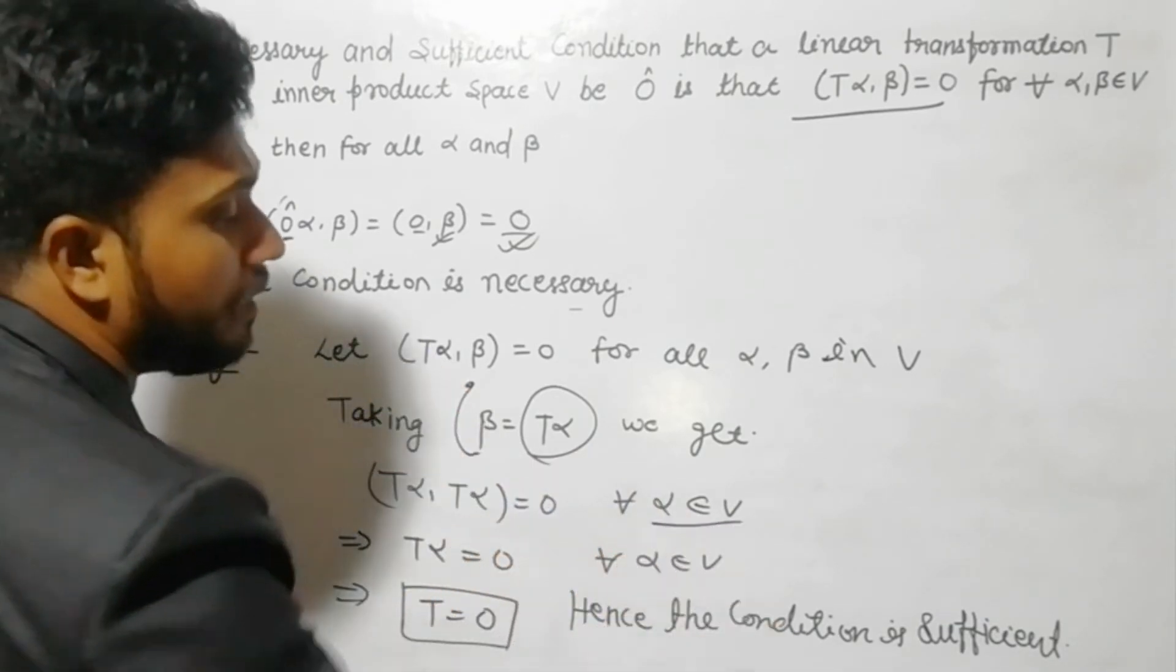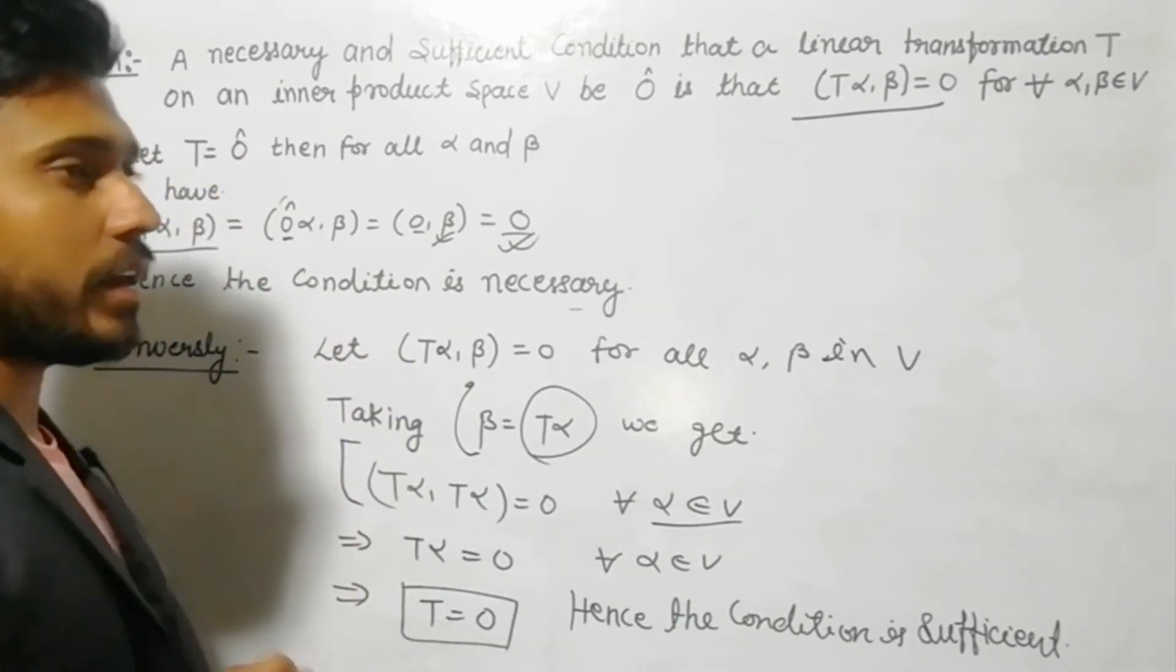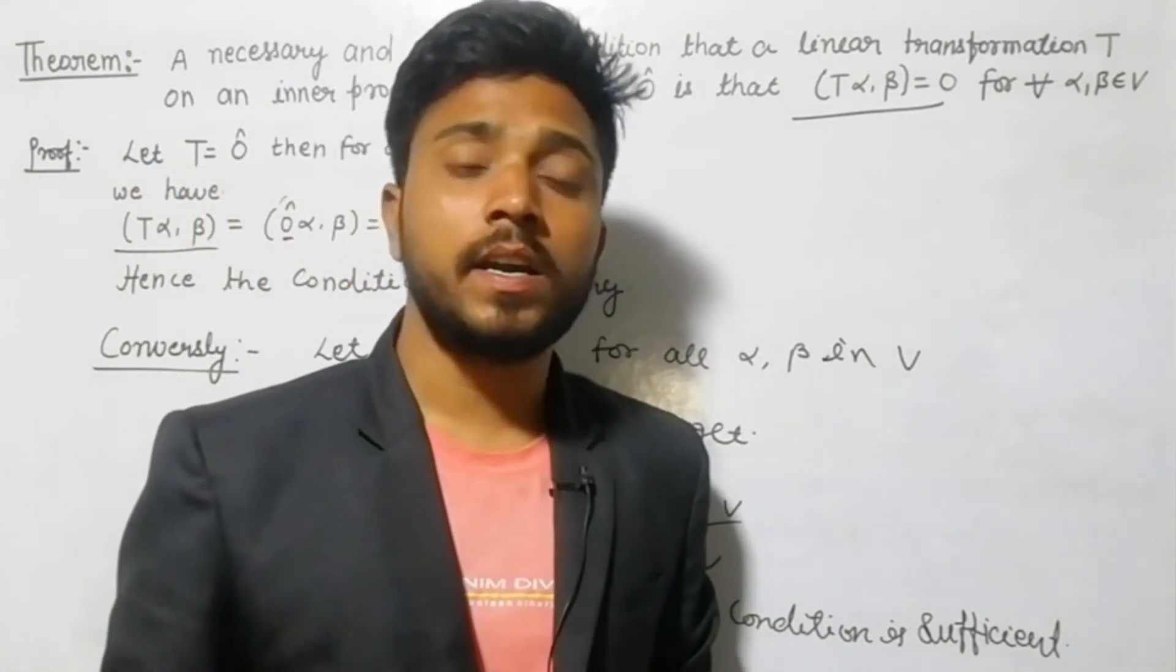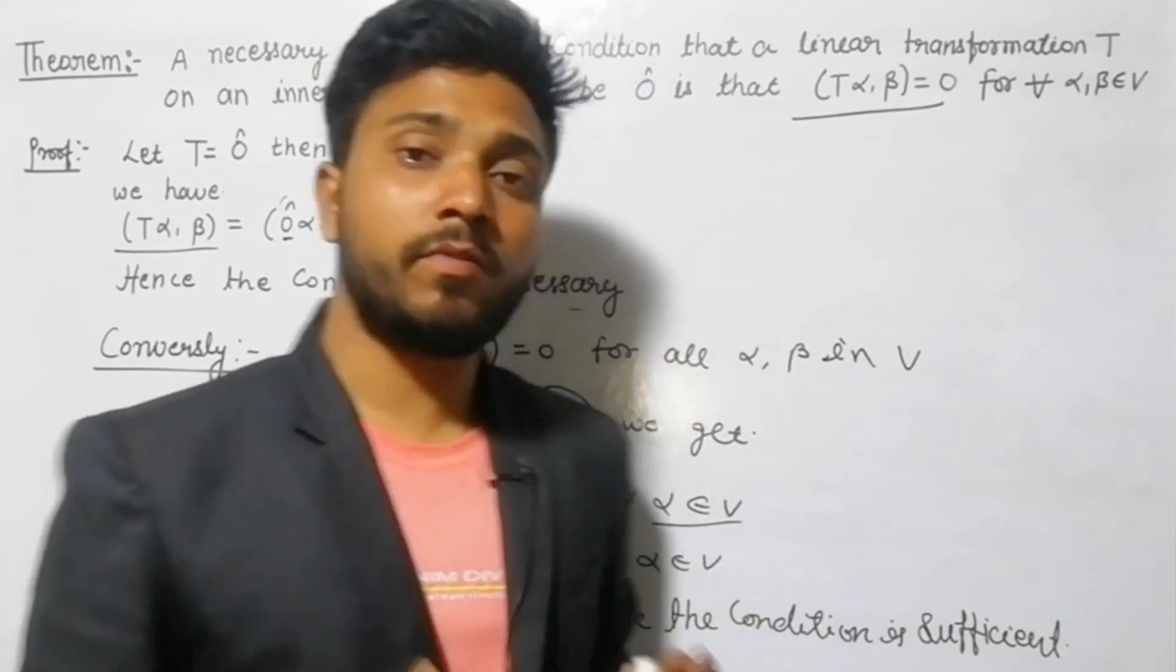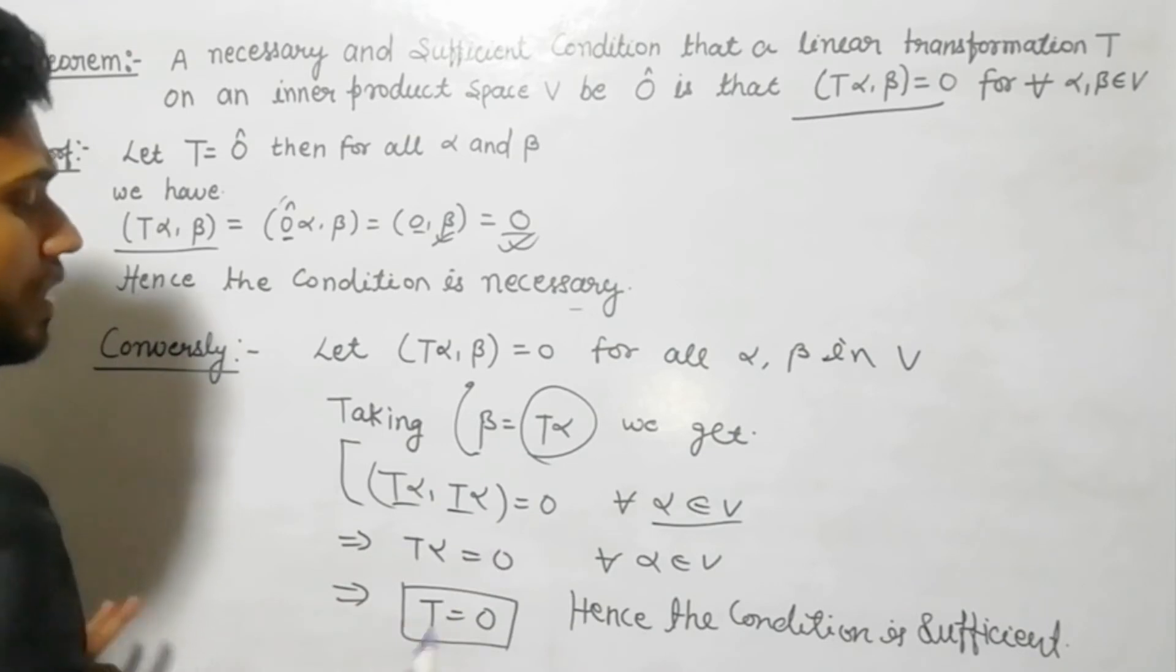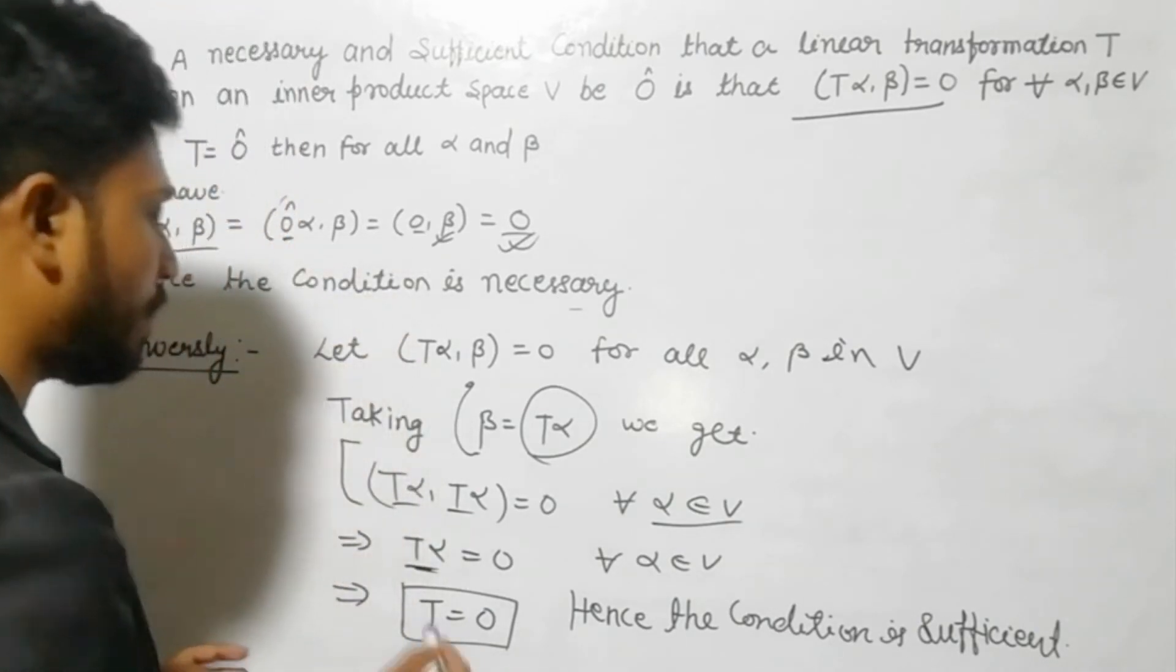Now guys, see, I told you in the inner product property that any two similar vectors' inner product is zero when that vector itself is zero. Understand? If the vector itself is zero... See, (T(α), T(α)) = 0, this means this implies that the vector itself, whatever vector is there...